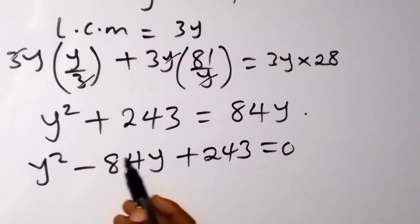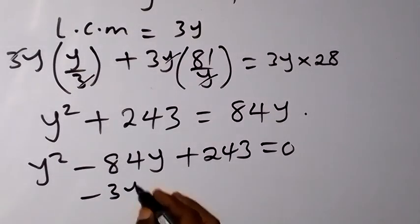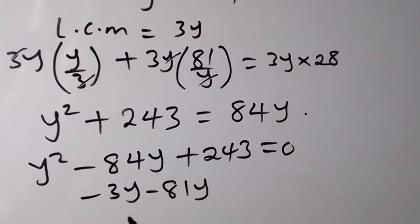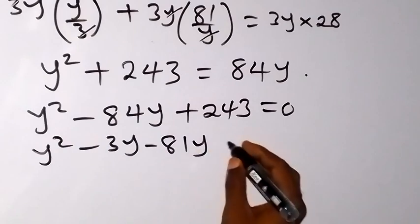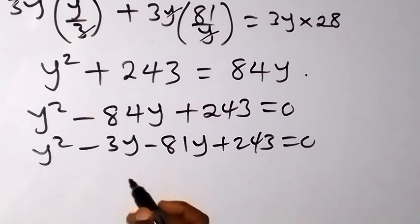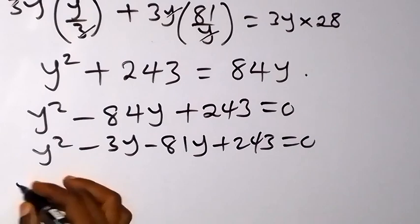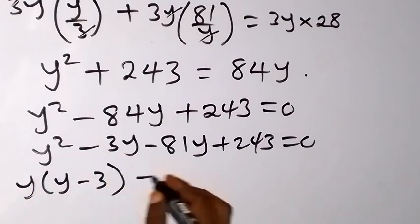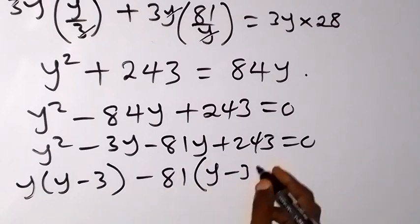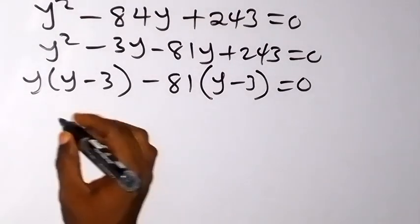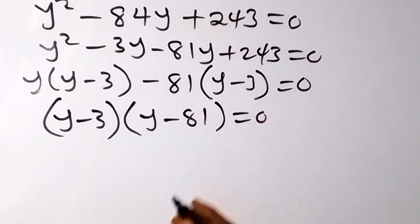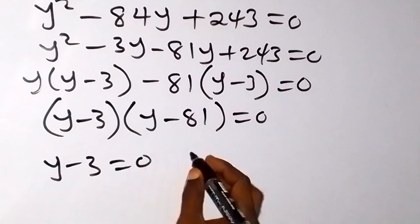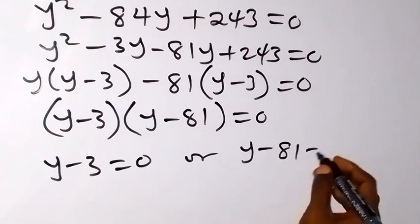Now we solve this quadratic. We rewrite minus 84y as minus 3y minus 81y. When we multiply these, we get 243. So we have y squared minus 3y minus 81y plus 243 equals 0. Grouping and factoring: y times (y minus 3) minus 81 times (y minus 3) equals 0, giving us (y minus 3)(y minus 81) equals 0.